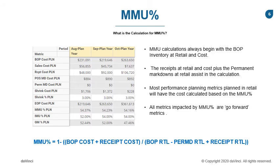This is a go-forward calculation. The performance metrics previously planned at retail are now calculated for costs based off of the MMU percent. The cost metrics will then recalculate the cost balance sheet and create a new end-of-period inventory, which will become the next period's beginning of period inventory, and all metrics will update again for a new end-of-period. This flow allows for the movement across time.